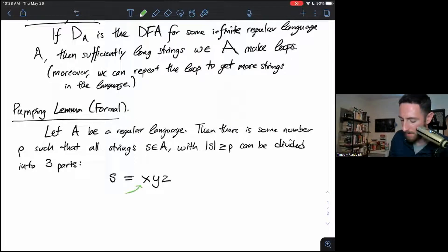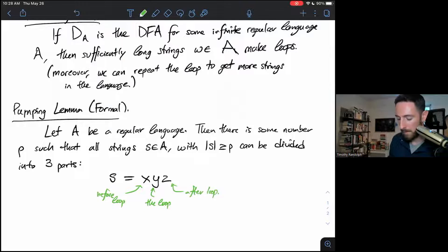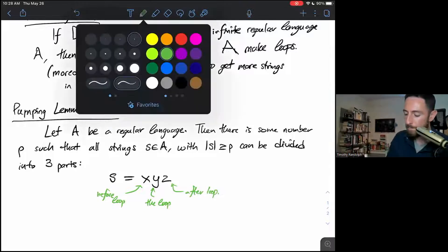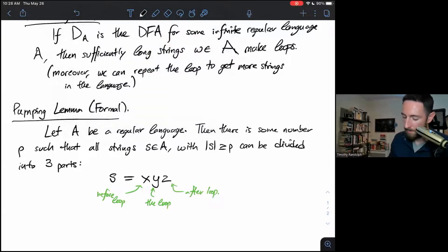I guess I'll leave our informal definition up. S can be divided into the first part X, the second part Y, and the third part Z. And if I were to annotate these parts, I'd say the first part is before the loop. The second part is the part of the string that takes us around the loop. And the third part is after the loop.